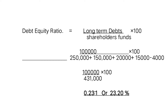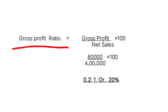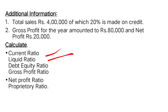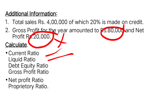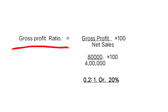Gross profit ratio is a new formula: gross profit divided by net sales, multiplied by one hundred. Gross profit is eighty thousand and net sales is four lakh. So eighty thousand divided by four lakh gives 0.2:1, that is twenty percent.